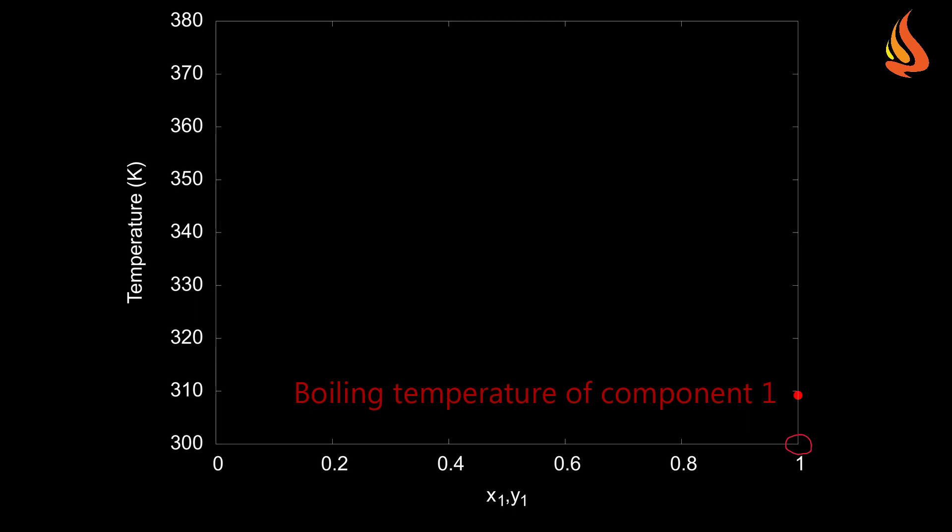The mole fractions in the liquid and vapor phases are on the horizontal axis. On the right-hand side of the figure, the mole fraction is equal to 1 and you have pure component 1, that is, pure n-pentane. The red dot identifies the boiling temperature of pure n-pentane. The left-hand side of the diagram is the condition in which the mole fraction of component 1 is equal to 0 and therefore we have pure component 2. The red dot identifies the boiling temperature of pure n-heptane.